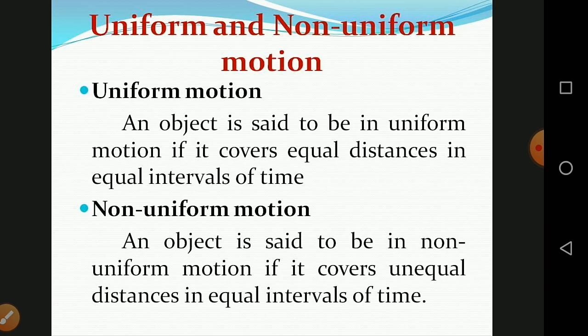Next, uniform and non-uniform motion. An object is said to be in uniform motion if it covers equal distances in equal intervals of time. For example, consider a car that covers 60 kilometers in the first hour, 60 kilometers in the second hour, and 60 kilometers in the third hour — it covers equal distances at equal intervals of time. That is uniform motion.